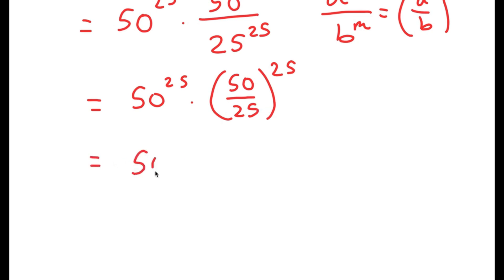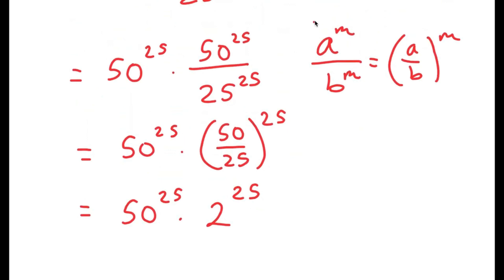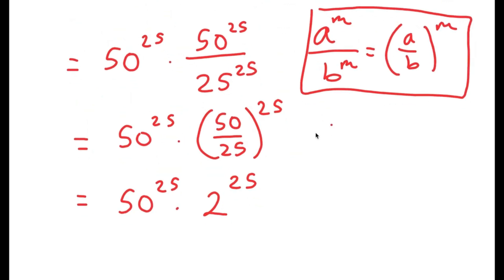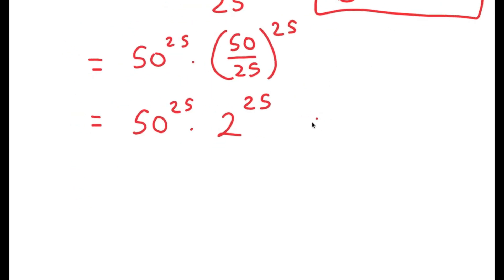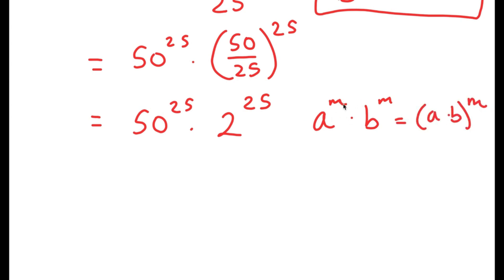This turns into 50 to the power of 25 times — well, 50 divided by 25 is 2 — so times 2 to the power of 25. Now another property I can use, which will be the final property of this video, is that if I have something in the form a to the power of m times b to the power of m, this is equal to a times b to the power of m. So you are basically just factoring out the exponent.